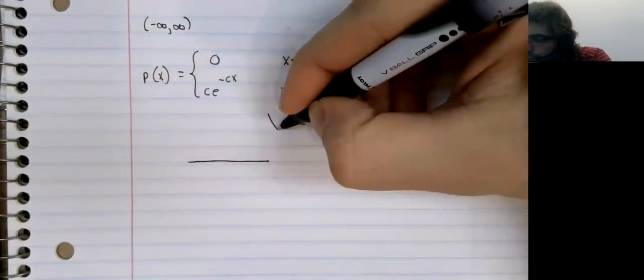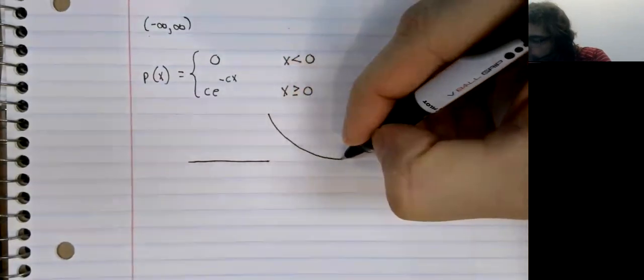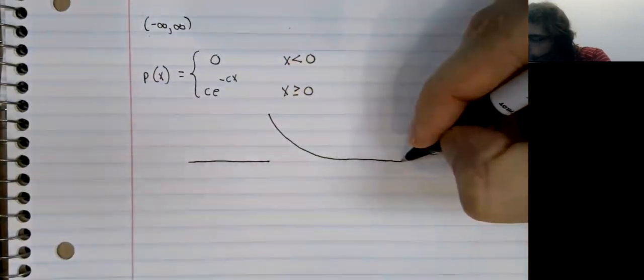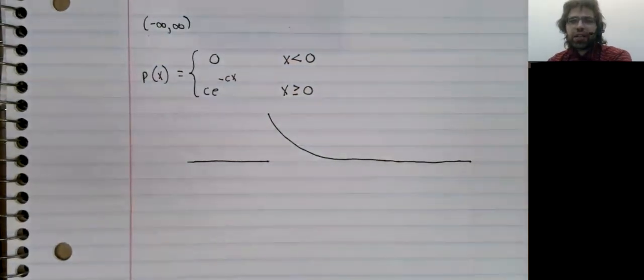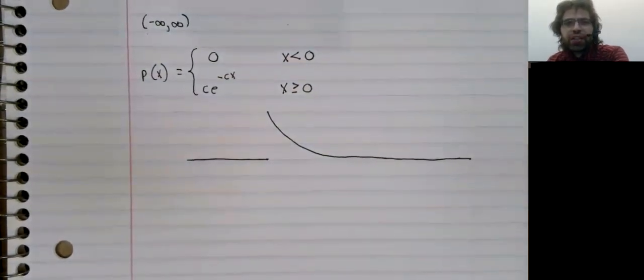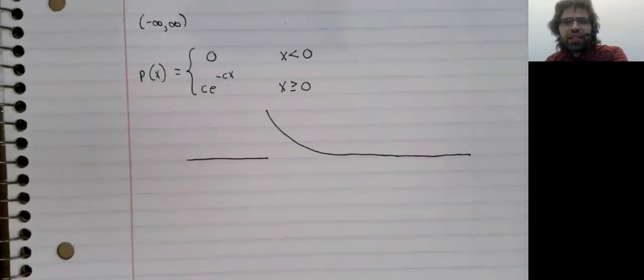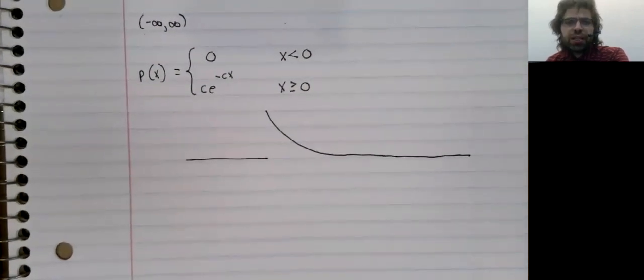So we have a graph that looks something like this. And let's demonstrate that it is a probability density function.